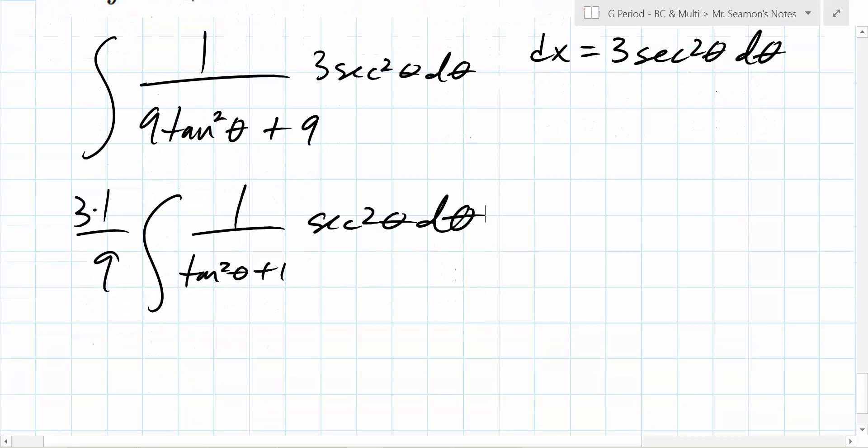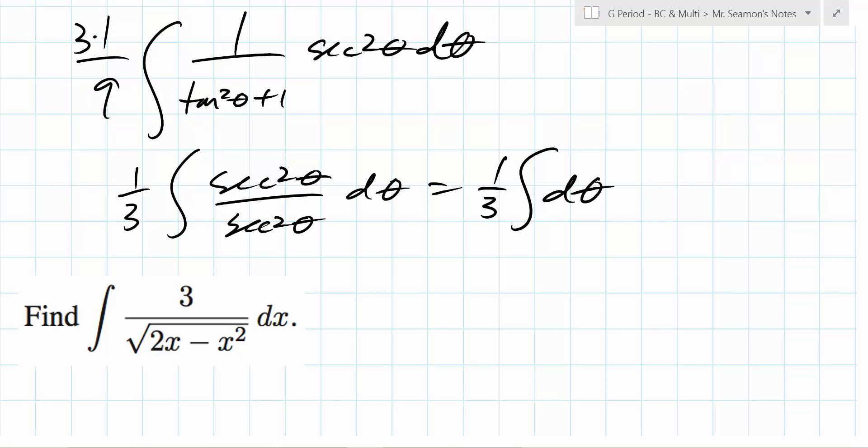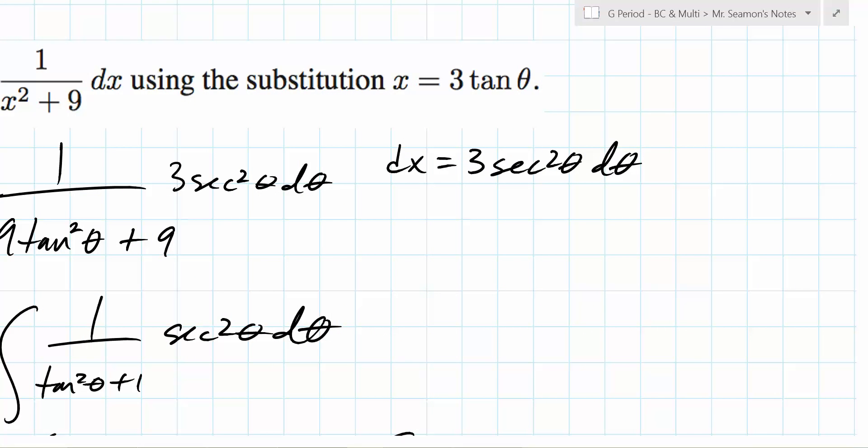So instead of dx, what do we write? 3 secant squared theta d theta, because now we're in theta land. Now, what's really nice about this? Well, can you factor out that 9? So you have one ninth of 1 over (tangent squared theta plus 1) times... the 3 comes out here, secant squared theta d theta. What's tangent squared plus 1? Secant squared. So what do you end up with? One third of secant squared theta over secant squared theta d theta, which is one third of d theta. Are we pretty much home free at this point?